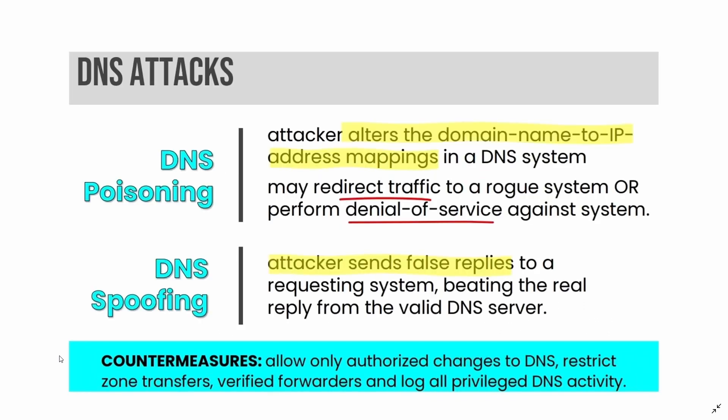Some other types of network attacks are DNS attacks, including DNS poisoning and DNS spoofing. DNS poisoning is when an attacker alters the domain name to IP address mappings in a DNS system, potentially redirecting traffic to a rogue system or performing denial of service. DNS spoofing is when an attacker sends false replies to a requesting system, beating the real reply from a valid DNS server. Countermeasures include allowing only authorized changes to the DNS, restricting zone transfers, verifying forwarders, and logging all privileged DNS activities.